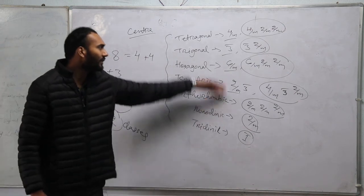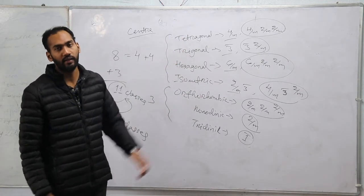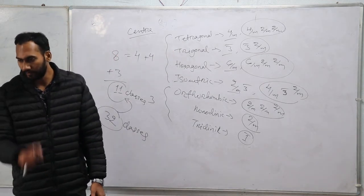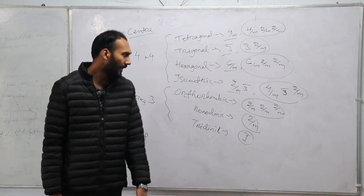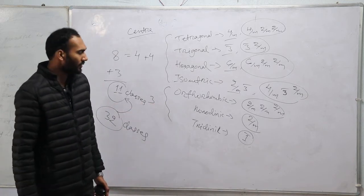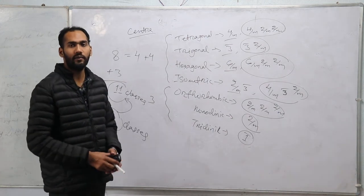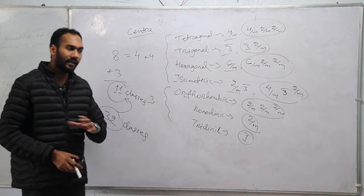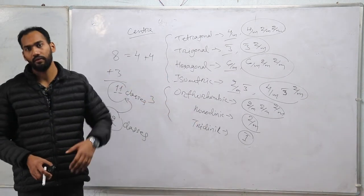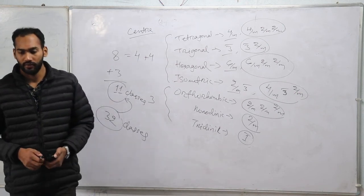So: out of 32 classes, 11 have a center of symmetry. Those 11 are the normal classes of each crystal system plus some additional classes in isometric, hexagonal, trigonal, and tetragonal systems. After these slides, in the next video I will go through all 32 classes individually — defining each class, the symbol, and how to determine the diagram from the symbol.